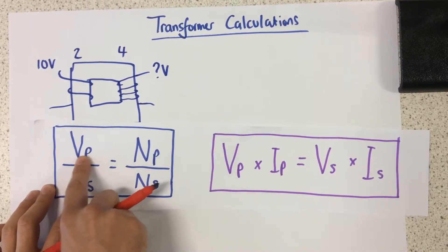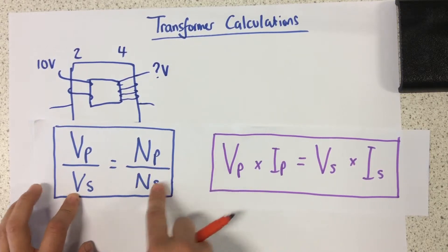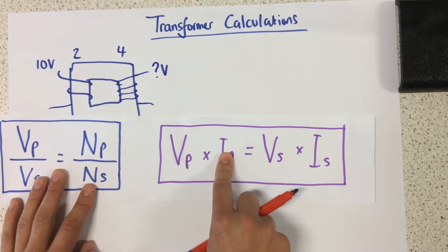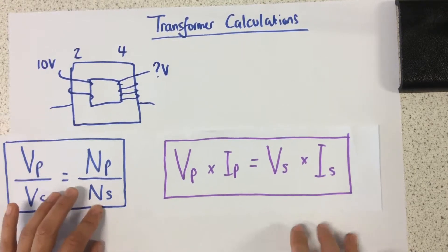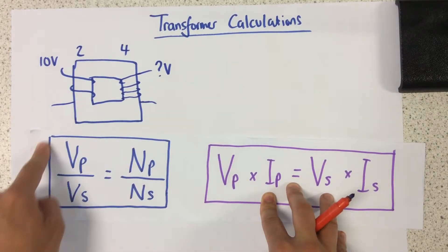Now this one is using voltage in the primary over voltage in the secondary equals number of turns at the primary over number of turns in the secondary. This one is using voltage and current at the primary compared to voltage and current at the secondary. So because we're dealing with number of turns, we're going to deal with this equation here.